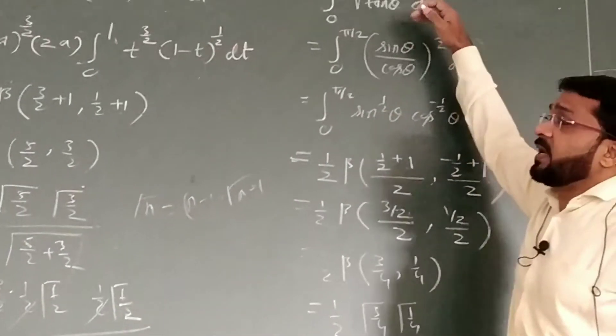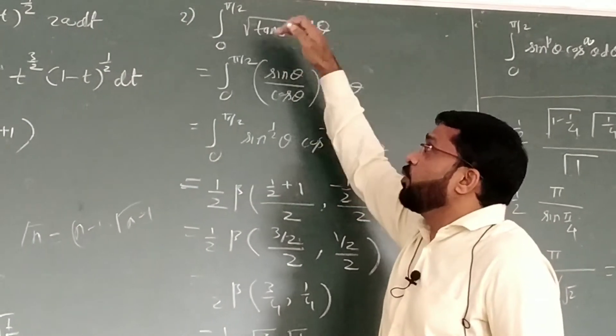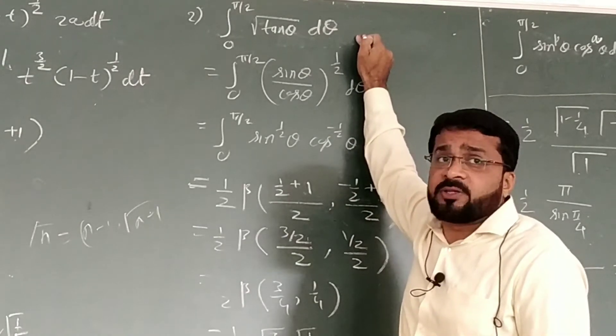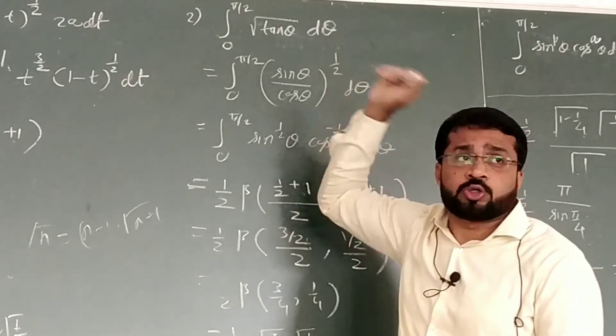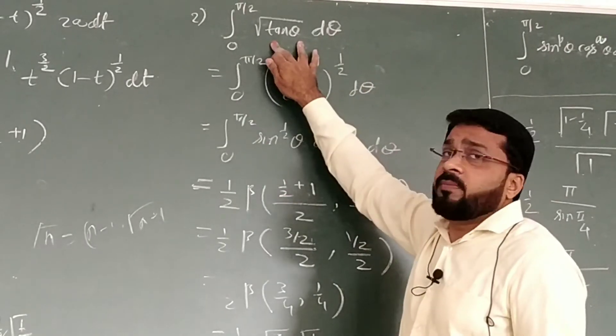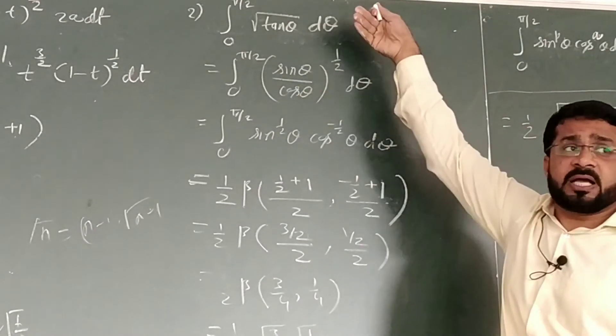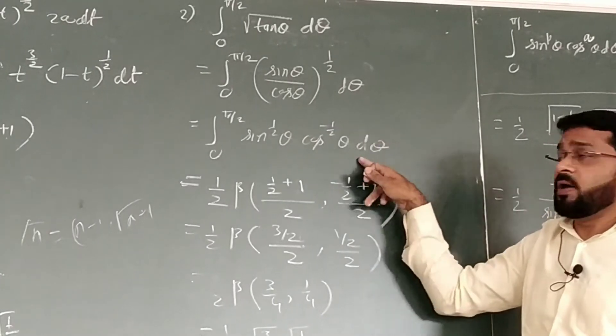Now, second example we will see, it is a very important example. Evaluate integral 0 to π/2, root of tan θ dθ. So, first of all, you have to simplify it, it will be in sin and cos, because we have the relation of the beta function in sin and cos. So, tan we break it to 2 parts, that is sin by cos. Cos we will take with negative index, so it will be sin to the power half, this is cos to the power minus half.